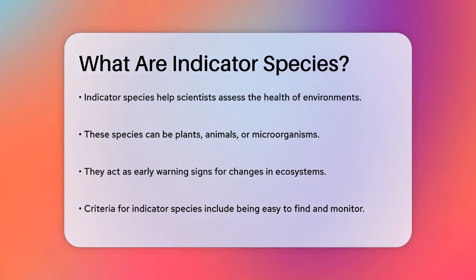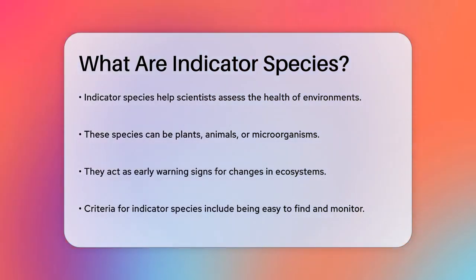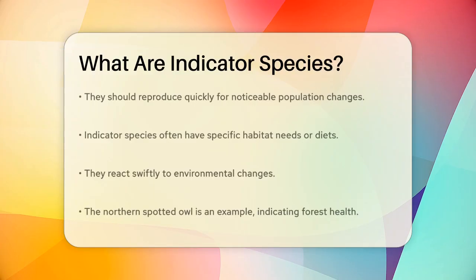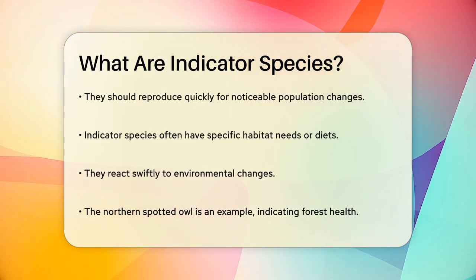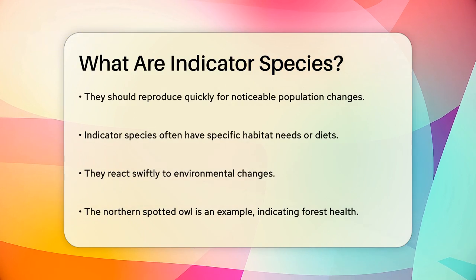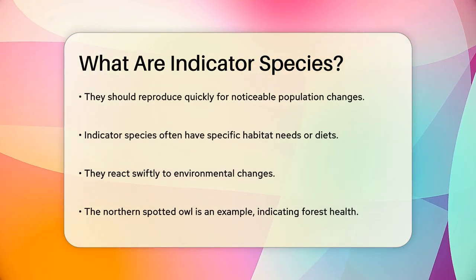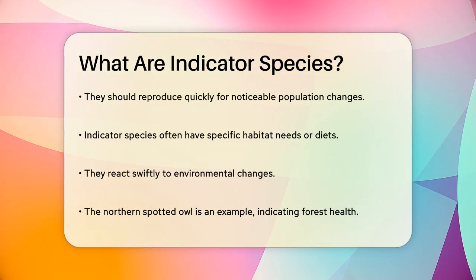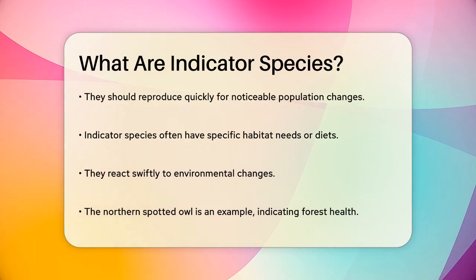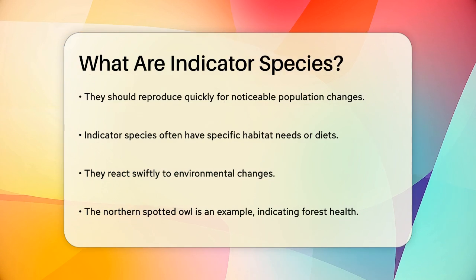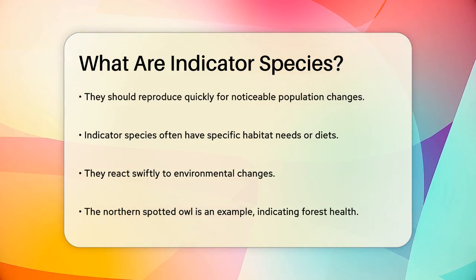For an organism to be considered an indicator species, it needs to meet a few criteria. First, it should be easy to find and monitor because it's common and widely distributed. Second, it should reproduce quickly so any changes in its population can be noticed fast. Third, it should have specific habitat needs or a specialized diet, making it sensitive to environmental changes. And lastly, it should react quickly to these changes.